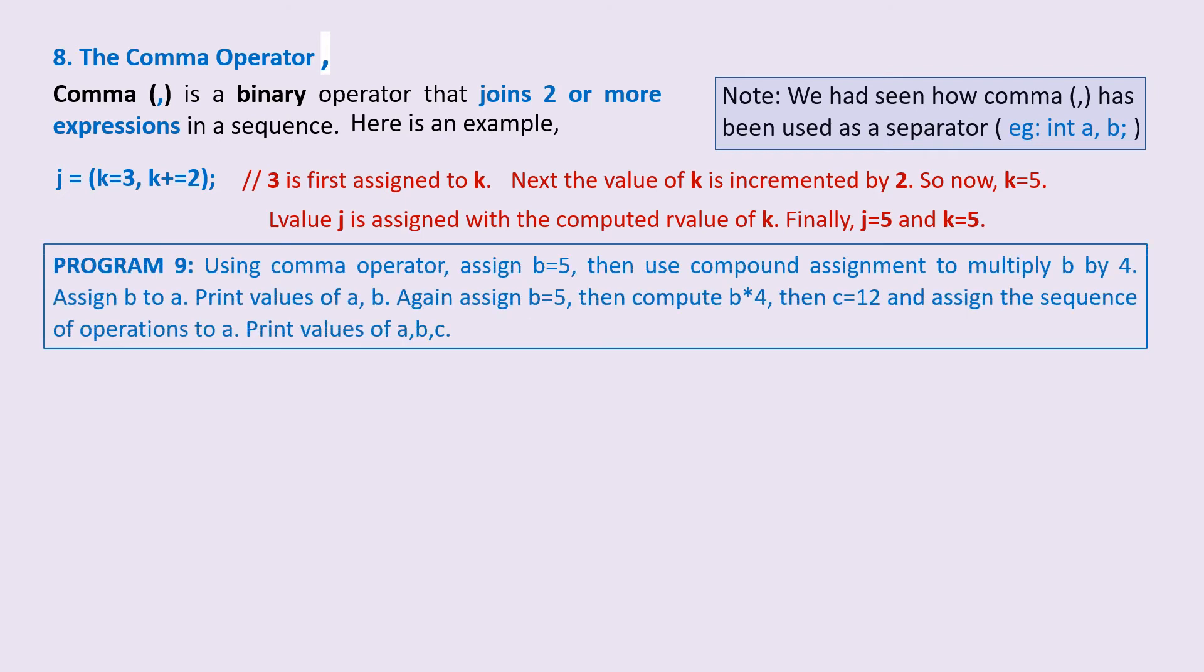Let's see how the comma operator works in our next program. Using comma operator, assign b=5, then use compound assignment to multiply b by 4.